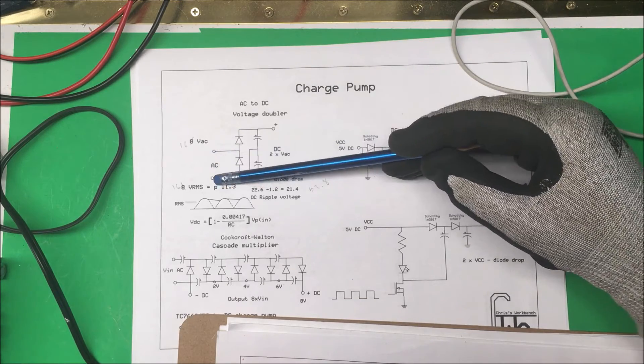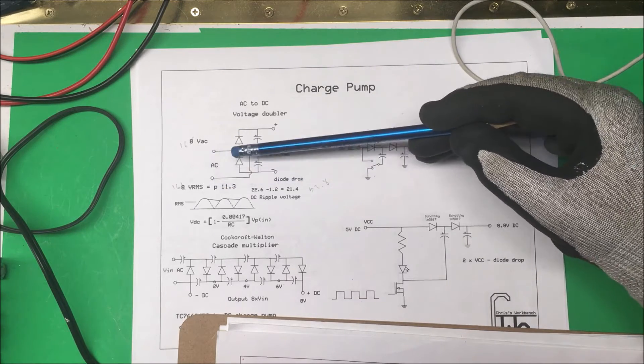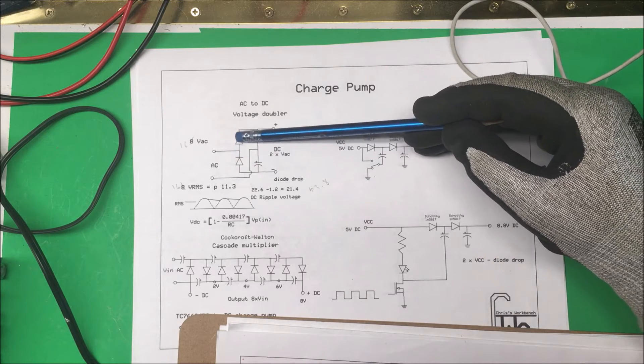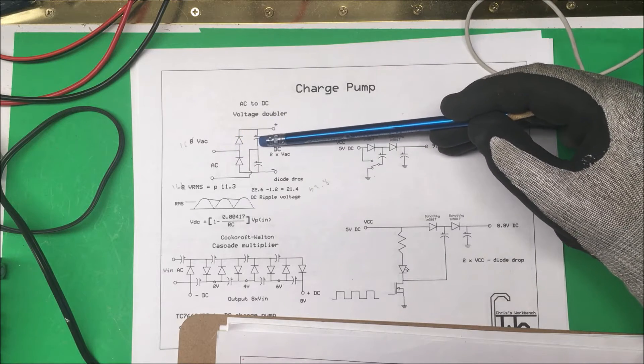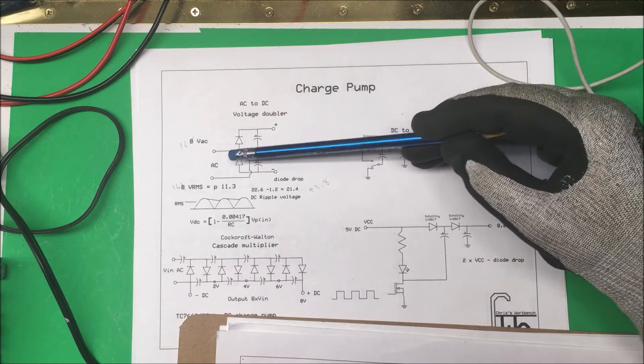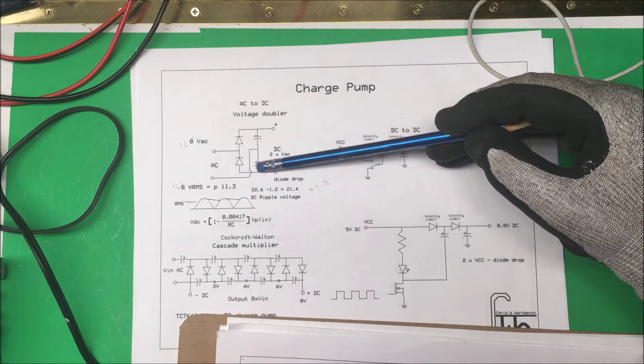What happens here is I'm putting 16 volts RMS voltage in, and when the sine wave is in a positive direction it allows this capacitor to charge up, and when it's in the negative direction it allows this capacitor to charge up.